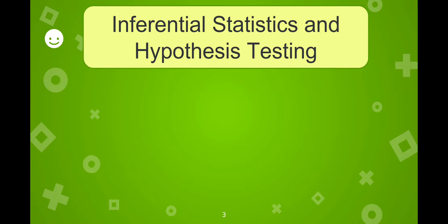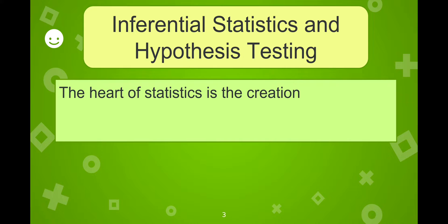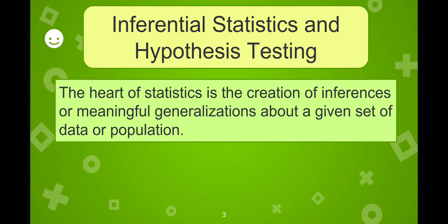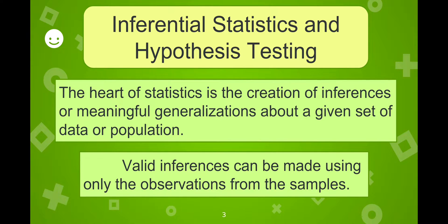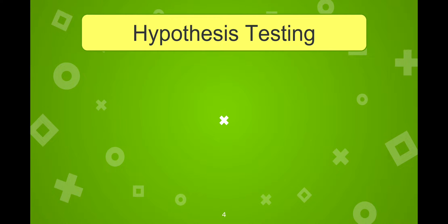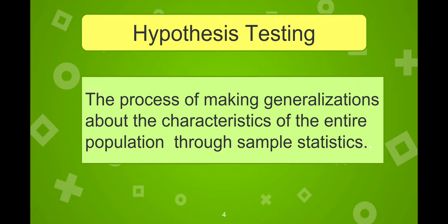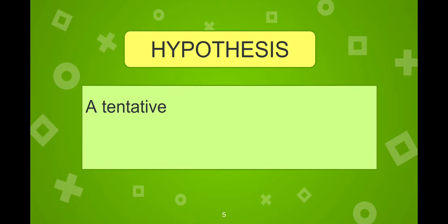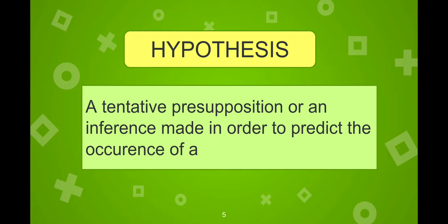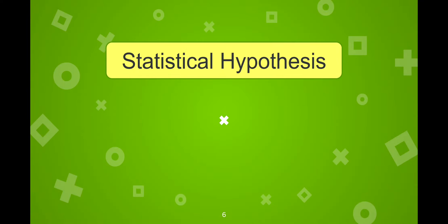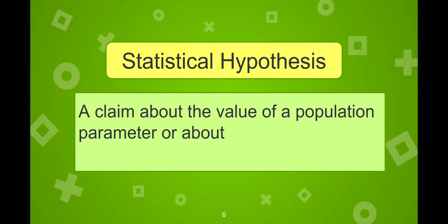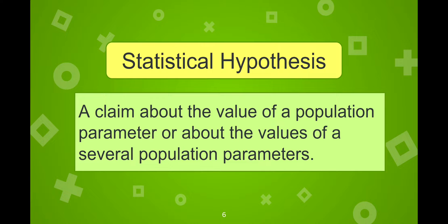In this lesson, you're going to perform the steps in making decisions and drawing conclusions from the result of the data obtained in hypothesis testing. The heart of statistics is the creation of inferences or meaningful generalizations about a given set of data or population. Valid inferences can be made using only the observations from the samples. Hypothesis testing is the process of making generalizations about the characteristics of the entire population through sample statistics. A hypothesis is a tentative supposition or an inference made in order to predict the occurrence of a phenomenon. A statistical hypothesis is the claim about the value of a population parameter or about the values of several population parameters.